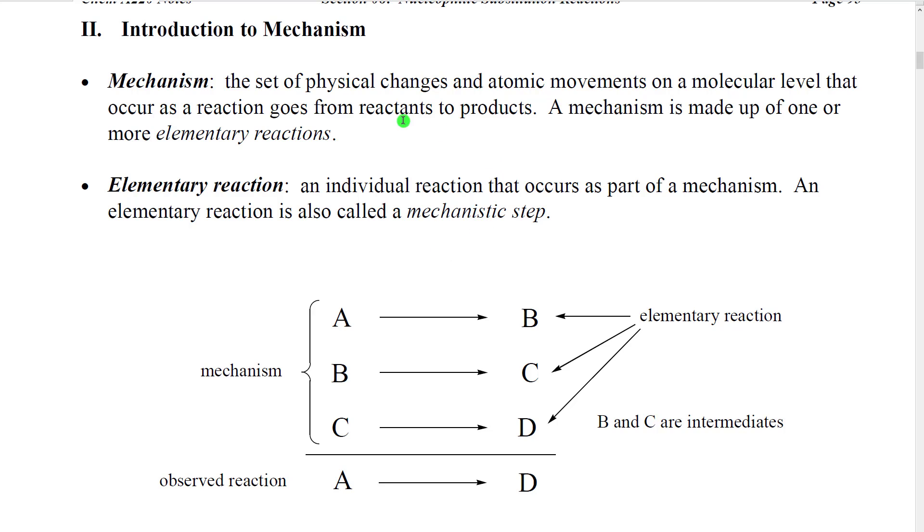So what is a mechanism? Well, technically a mechanism is the set of physical changes and atomic movements on a molecular level that occur as the reaction goes from reactants to products. In other words, when we have a chemical reaction, we have a substance with a certain number of atoms and bonds arranged in a certain way. That substance changes into the product. What we want to understand is how did the atoms move? How did the bonds break and become formed in order to transform the reactant substance into the product substance?